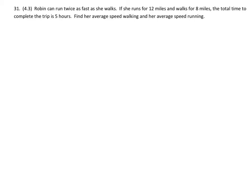In this problem we can see Robin runs twice as fast as she walks. If she runs for 12 miles and walks for 8 miles, the total time to complete the trip is 5 hours. Find her average speed walking and her average speed running.